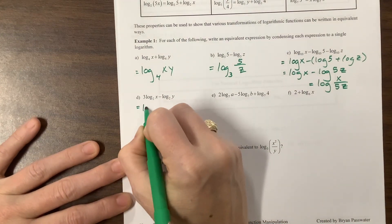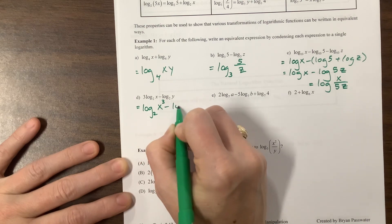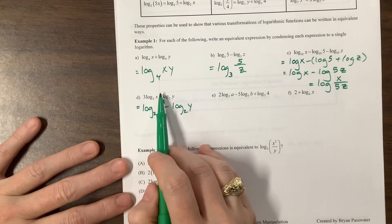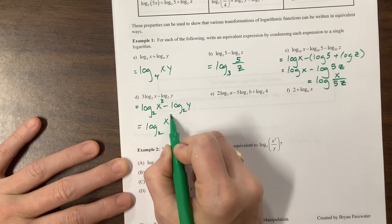Continuing on, the intermediate step, which you may or may not need, is that this is 3 log base 2 of x minus log base 2 of y. So the number out in front becomes the exponent. And so then I can squish this together with division.